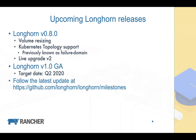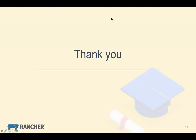If an availability zone goes down, you'd lose data in that AZ. With Longhorn's new topology support in 0.8, you can use Longhorn on top of EBS to provide cross-AZ support. After that we're targeting Q2 2020 for the Longhorn 1.0 GA release. You can follow the latest updates at github.com/longhorn/longhorn/milestones, and for discussion you're welcome to join the CNCF Longhorn Slack channel — we're migrating from the Rancher Users channel to the CNCF channel since Longhorn became a CNCF sandbox project.